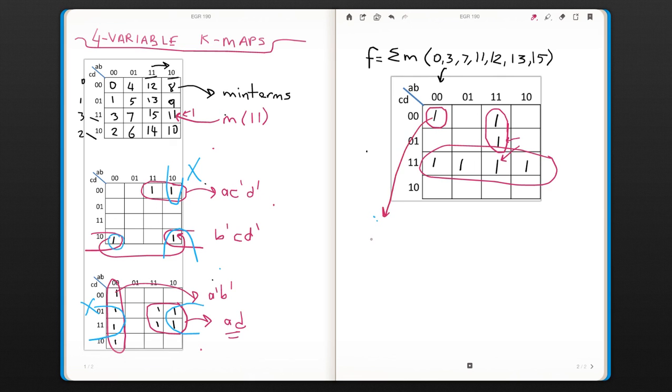So this is going to be A', B', C', D'. So let's write the function. Plus, let's get this term. C and D are not changing, but A and B are changing all. So it's going to be C, D. Plus this term: A and B are not changing. C is not changing, and D is changing. So this is our function.